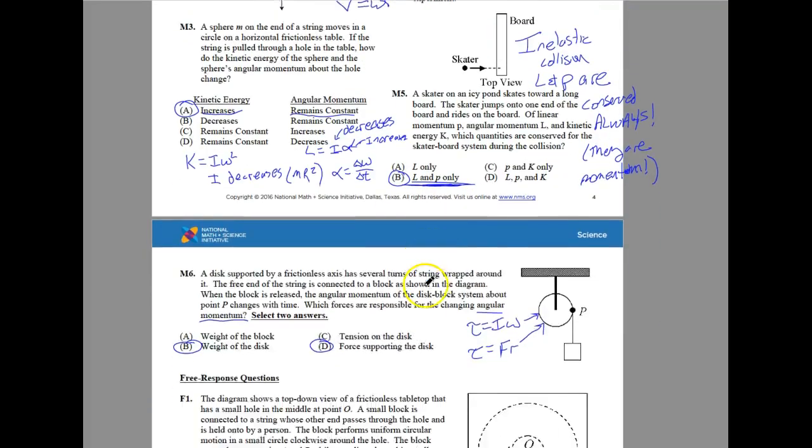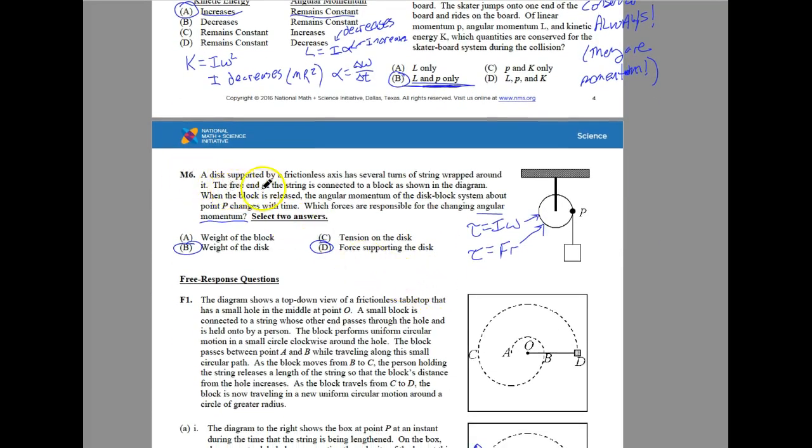Let's go ahead and take a look at the last one. We have a disk supported by a frictionless axis. It has several turns of string wrapped around it. The free string end is connected to a block. When the block is released, angular momentum of the disk block system about point P changes with time. They want to know which forces are responsible for changing the angular momentum. We know that torque is equal to I omega. Torque is also equal to force times resistance.